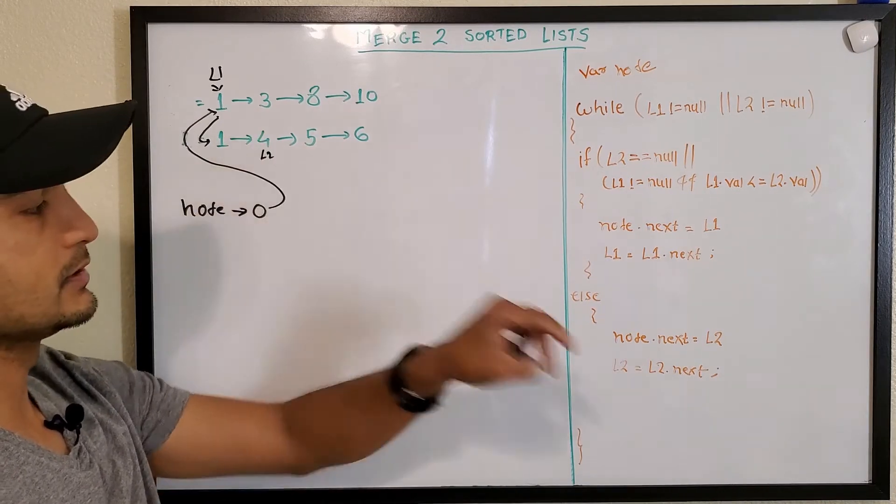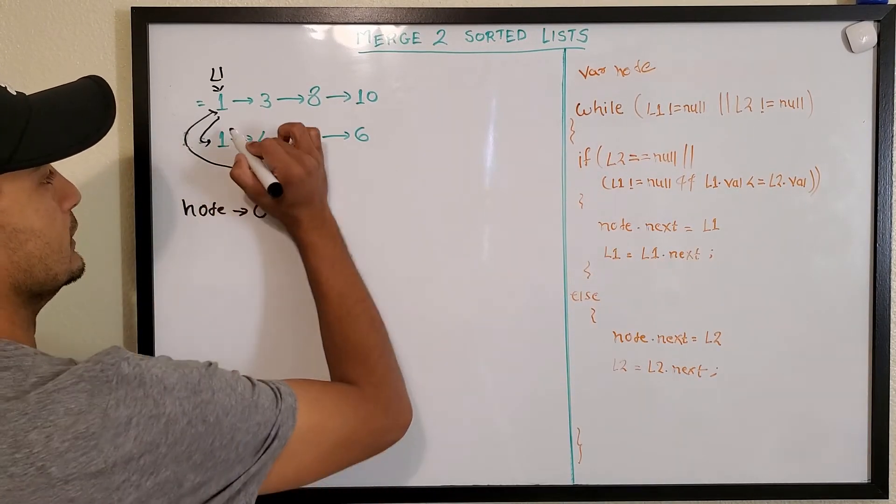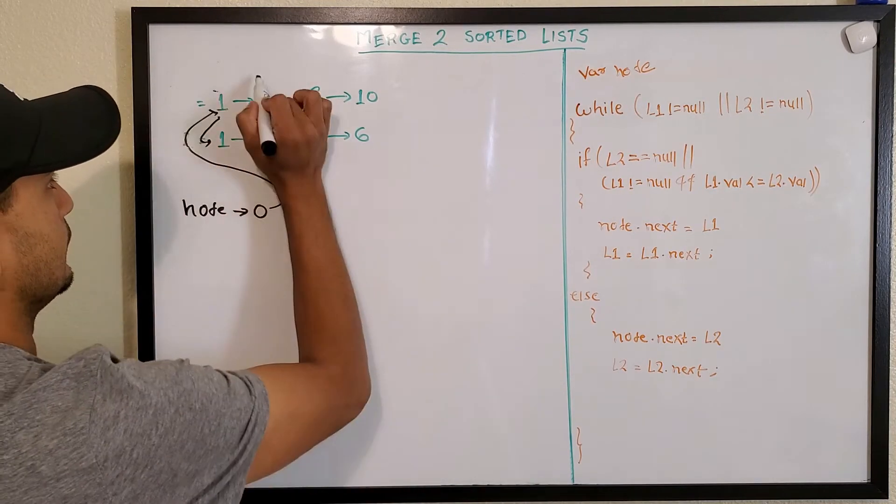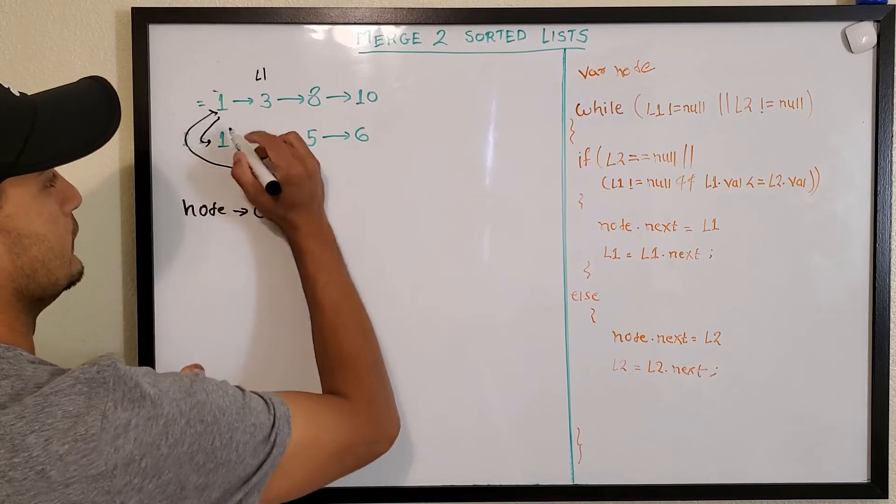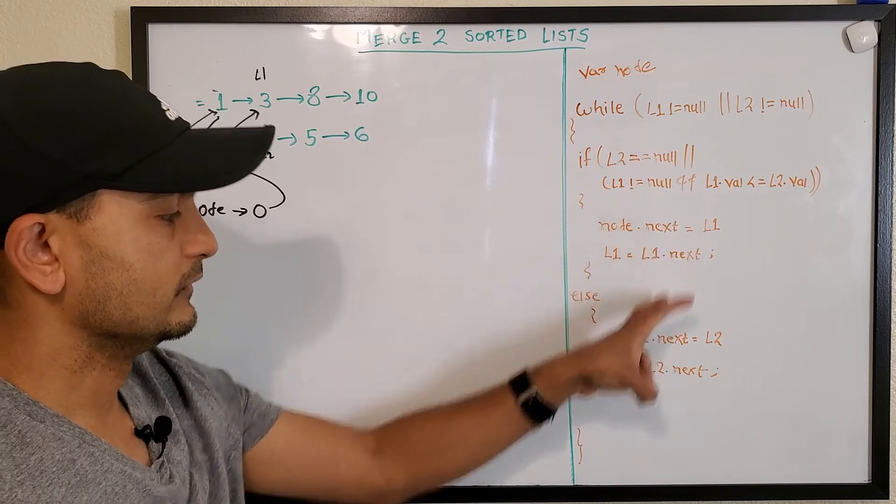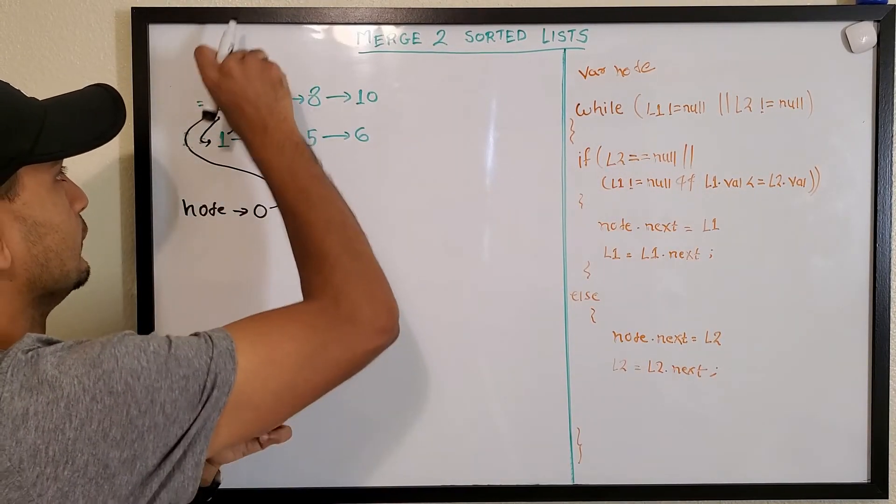So three is less than four? Yes. So node will point to L1 and L1 moves to next, so this will now point to... L1 should have been here, sorry. Yeah, so now this will point to this guy, and we'll go again and then compare. L1 will obviously move here.